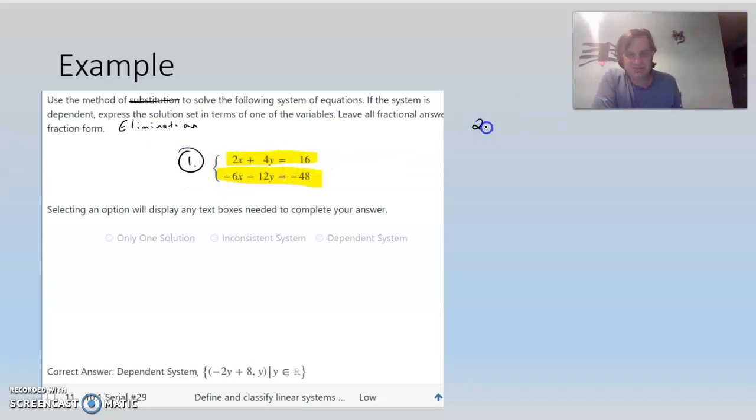Step 2 would be to make like coefficients, and let's just work with the X. So I have a negative 6X and I have a 2X. Well, I can make both of these 6 if I multiply the top one by 3. So that's what I'll do.